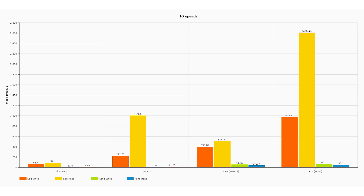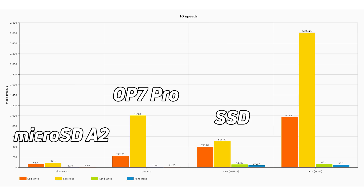The slowest random read and write is on the physical hard drive — it must physically move the head and wait for the disk to spin. Comparing the best from each category: a micro SD A2 card, OnePlus 7 Pro, SSD over SATA 3, and M.2 over PCI Express, you can see a very wide performance range. A micro SD card has very different performance than a smartphone, SSD, or M.2 module, though the SSD and M.2 don't differ hugely in random read/write.